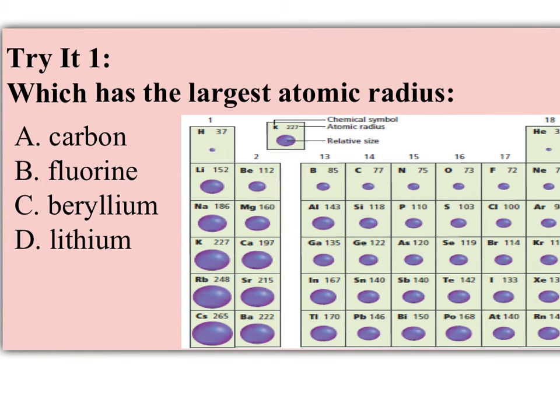So here's a couple for you to try. Which of these atoms would have the largest atomic radius? Carbon, fluorine, beryllium, or lithium. Now you could just look at the numbers or look at the graphic and you should be able to see that lithium is clearly the largest. But remember why it's the largest. They're all in the same period, so they all are filling up the second energy level. But lithium has the weakest nucleus, making it the largest of those four atoms.